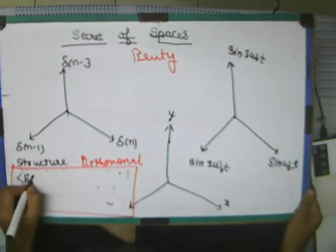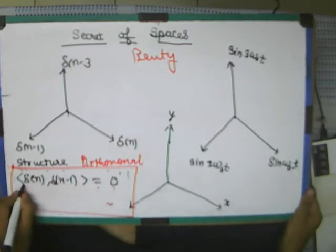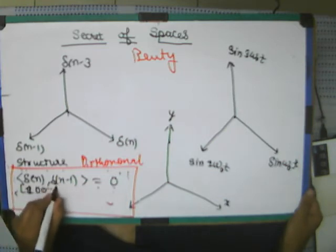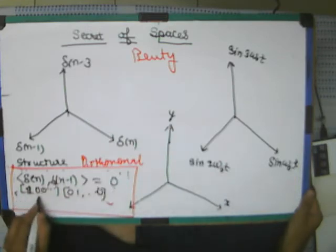Because you dot product delta of n with delta of n minus 1, it will give equal to 0. Just see. 0, 1, 1, 0, 0. This is 0, 1, and this all 0. If you dot product each one of them, you will get 0.